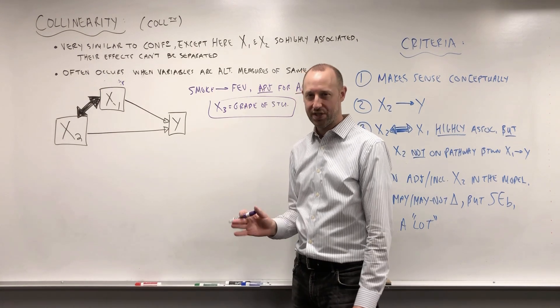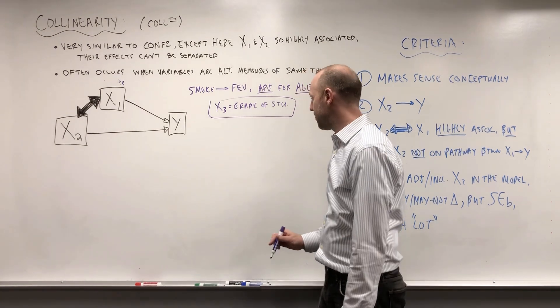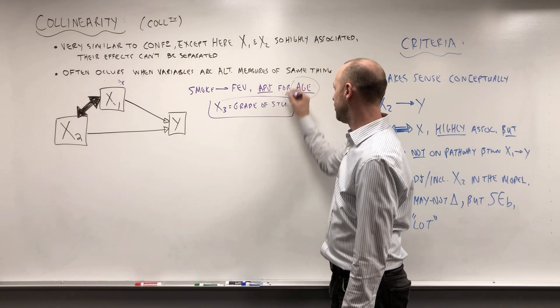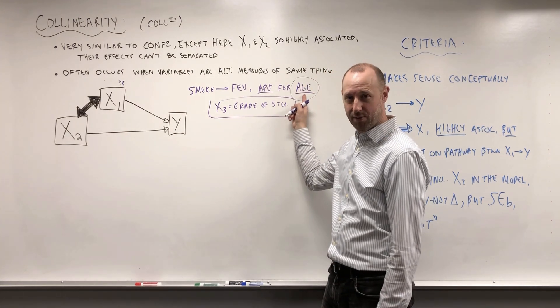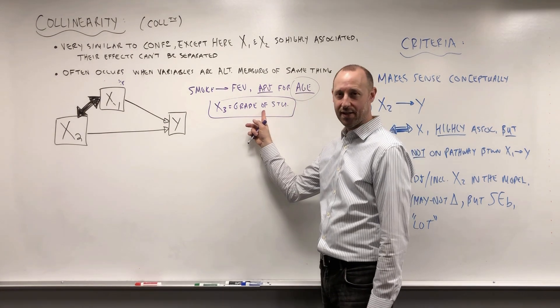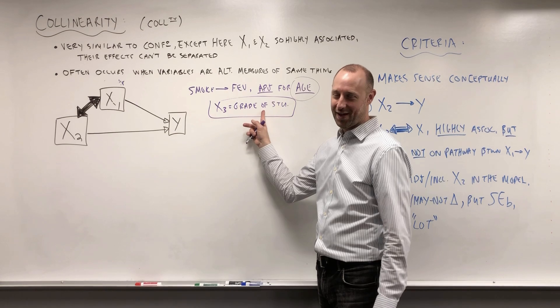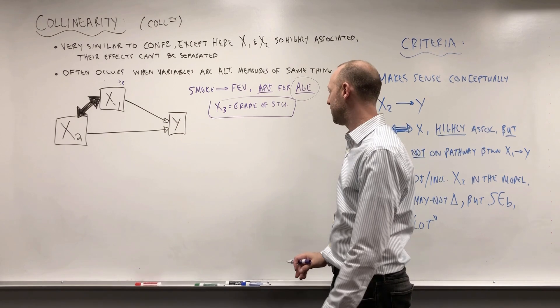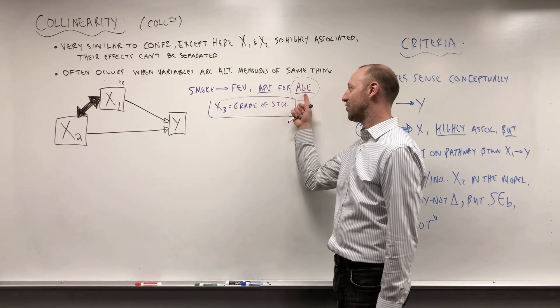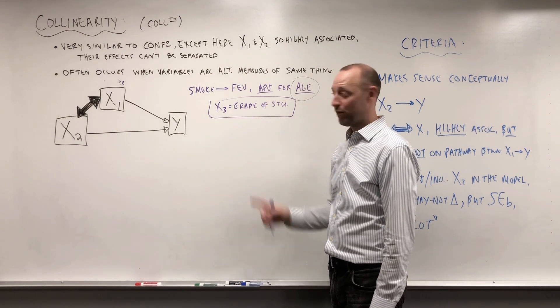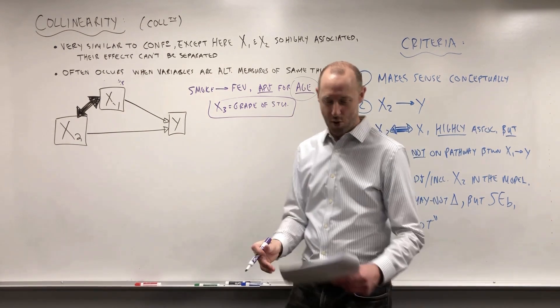The one we choose to adjust for is sort of up to us to make that decision. We might prefer to adjust for the more recognizable variable. If I tell you kids in grade six, you probably don't know what age they are unless you have kids close to that age. So you might choose to adjust for age rather than grade, or you might have an argument for adjusting for grade instead of age. But the point is you choose one of the two, not both.